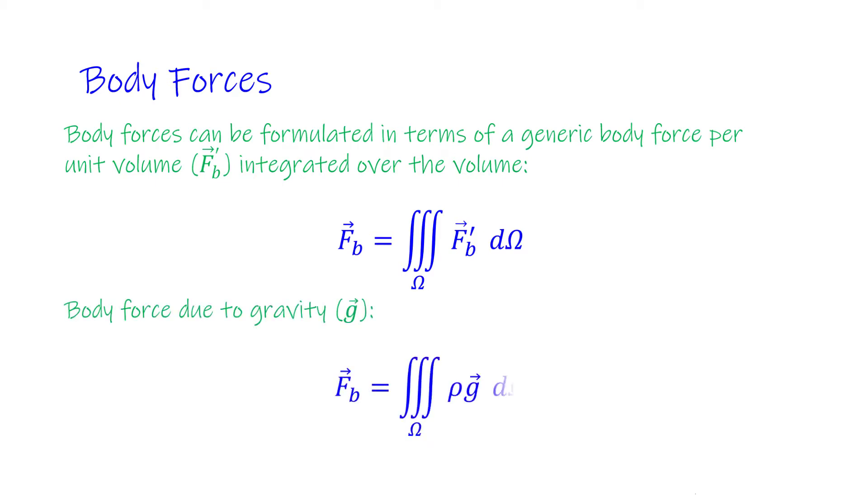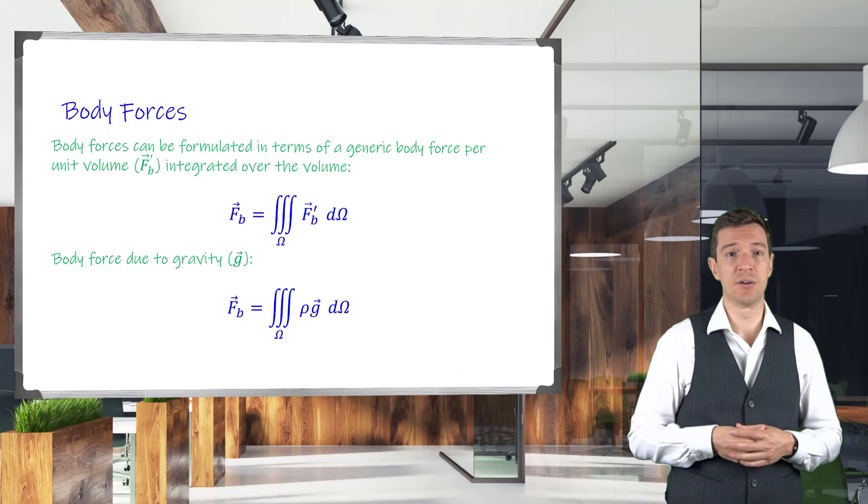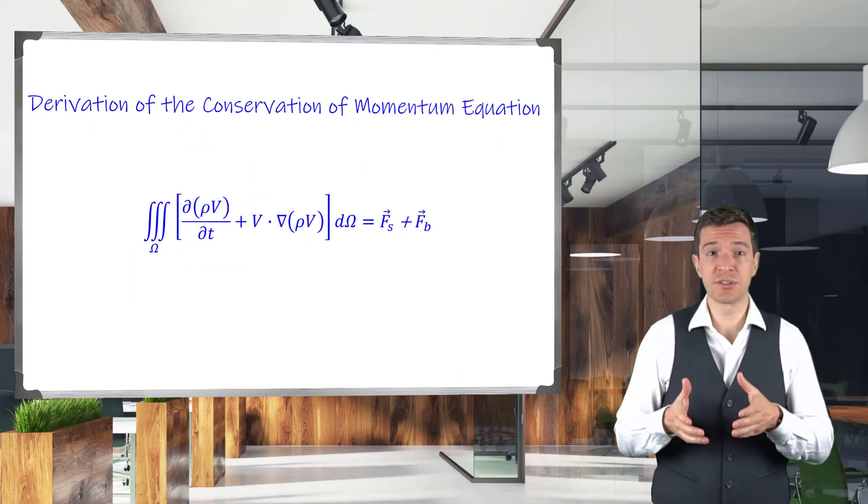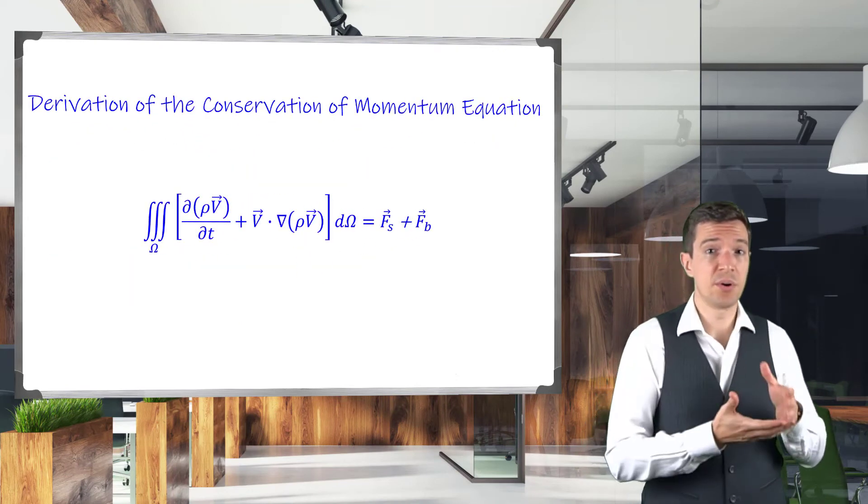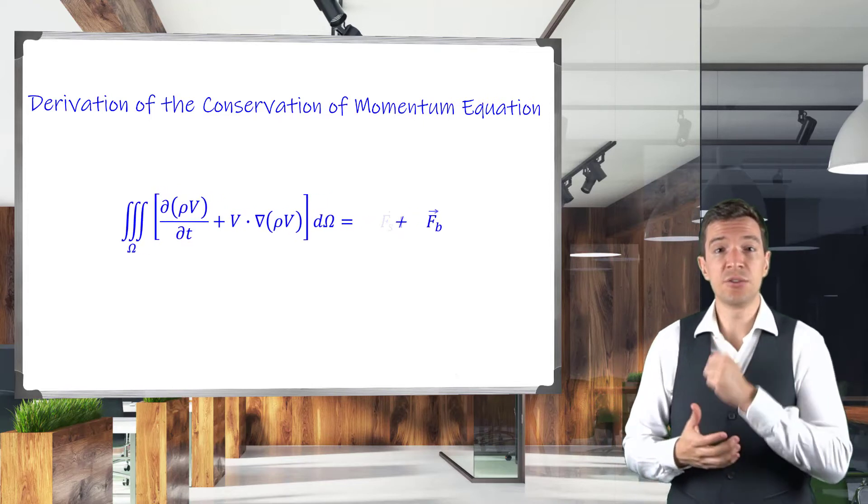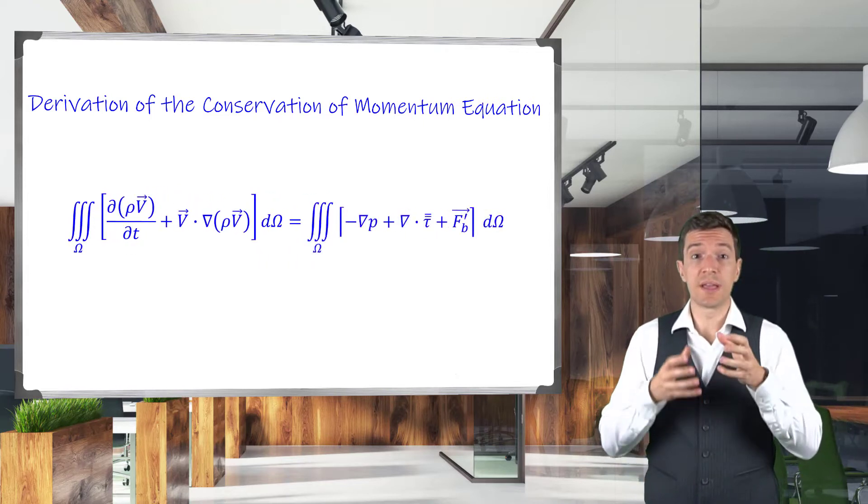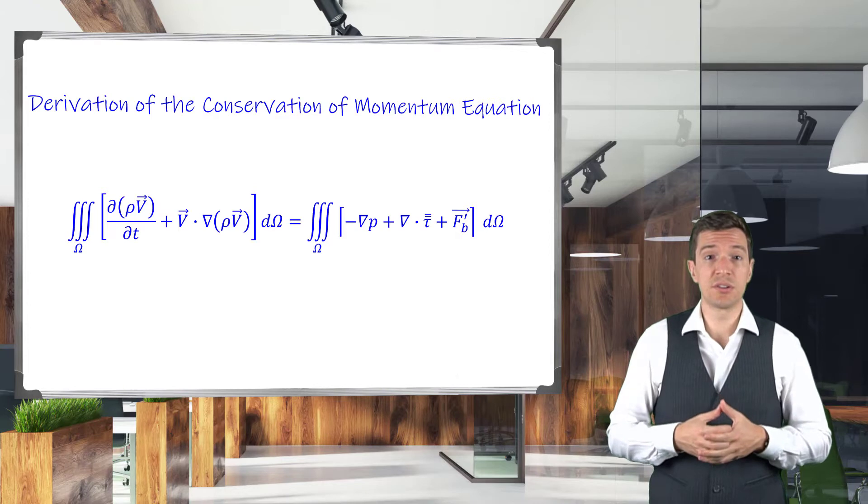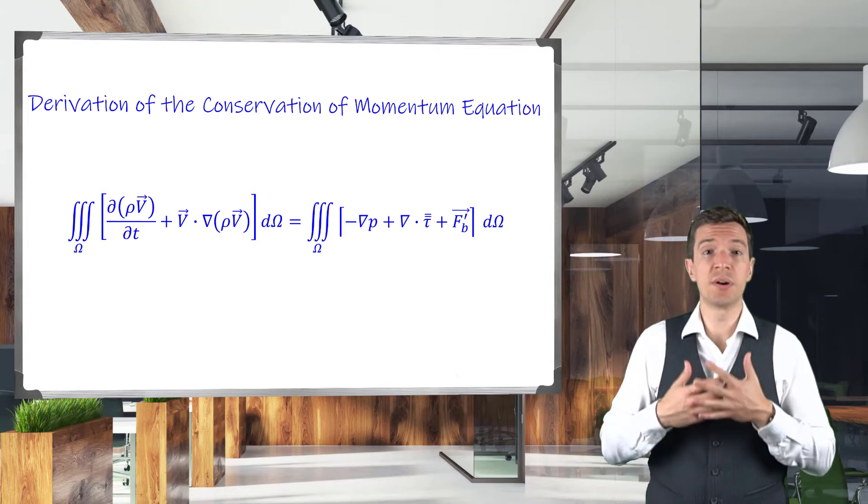An example of body force is the one due to the gravitational acceleration field. Now, substituting the expressions we just derived for the surface and the body forces into the momentum equation, we can obtain the equation in terms of volume integral.